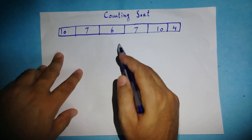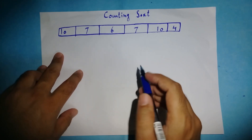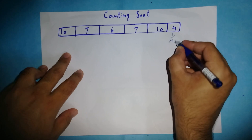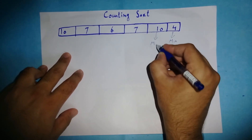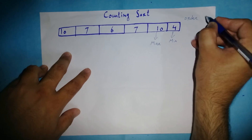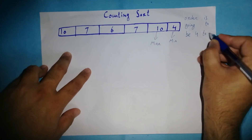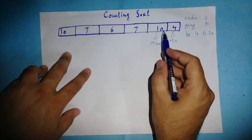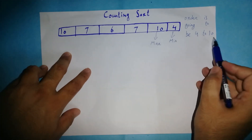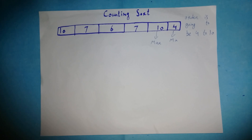When you are going to use counting sort, first of all you have to find which value is the minimum and which value is the maximum in the given array. As you can see, 4 is the minimum value and 10 is the maximum value in the given array. So your order is going to be 4 to 10.